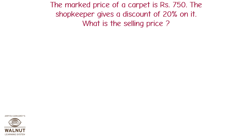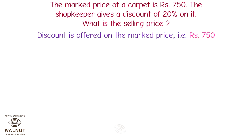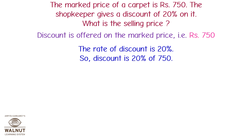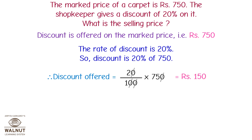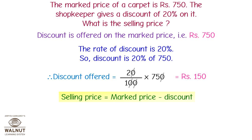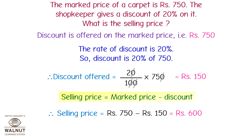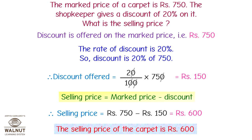The marked price of a carpet is Rs. 750. The shopkeeper gives a discount of 20% on it. What is the selling price? The marked price is Rs. 750 and the rate of discount is 20%. The discount is 20% of Rs. 750, which equals 20/100 × 750 = Rs. 150. Therefore, the selling price is Rs. 750 − Rs. 150 = Rs. 600. The selling price of the carpet is Rs. 600.